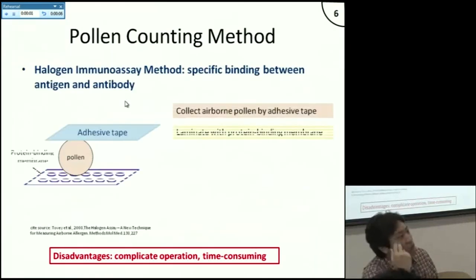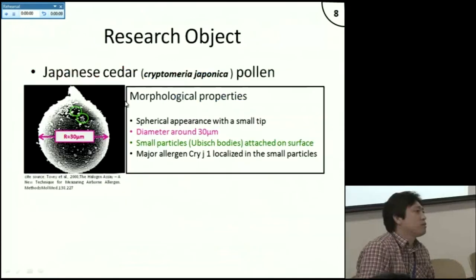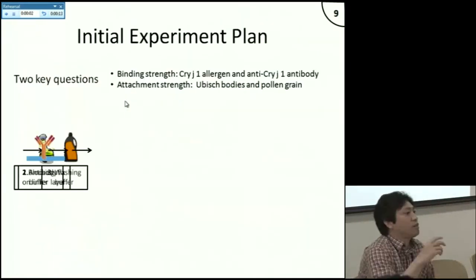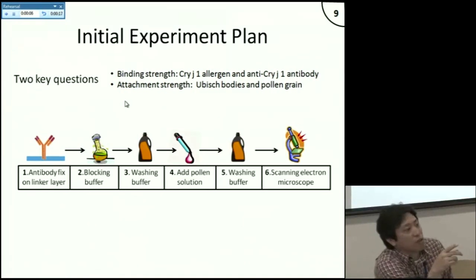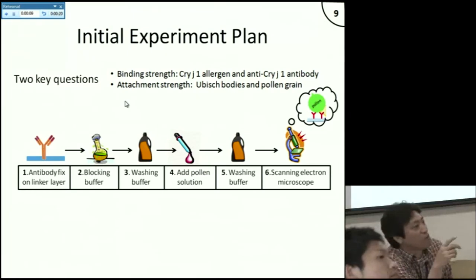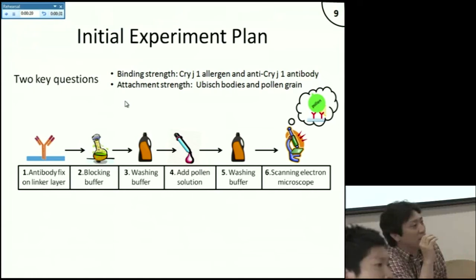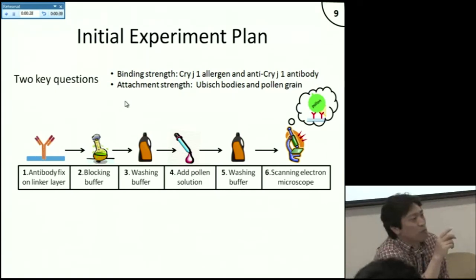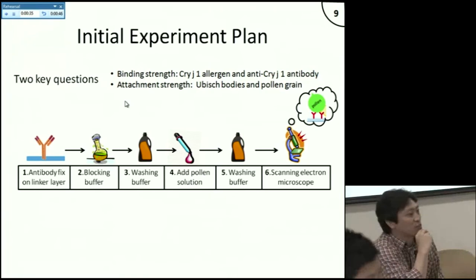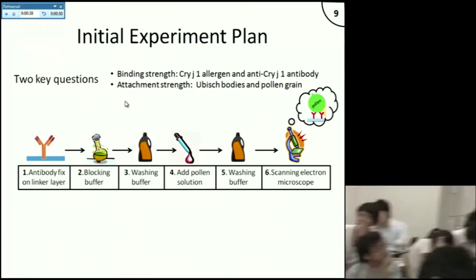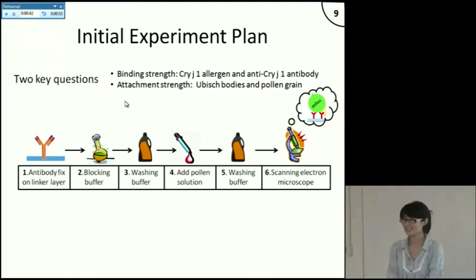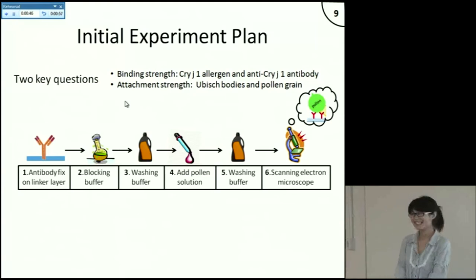You are studying a very interesting topic. On slide 9, to observe the pollen you used a scanning electron microscope. I think you may not need to use that, because the size of the pollen is quite large. You can see it with just a regular microscope — to put the size limit, you would need a scanning electron microscope only for smaller objects. Thank you very much. We also have a digital microscope, which makes it very easy to see. Thank you.